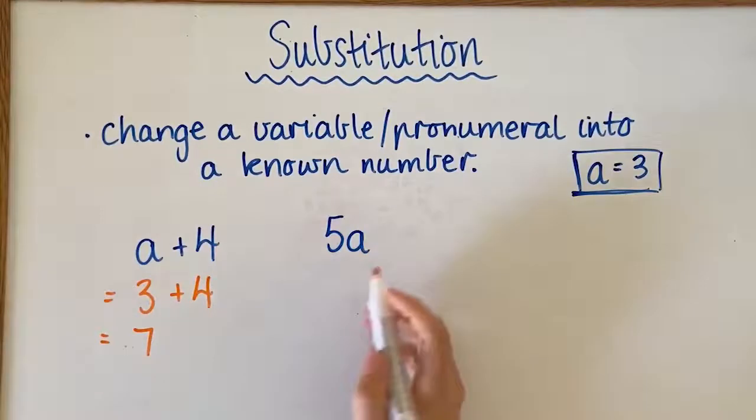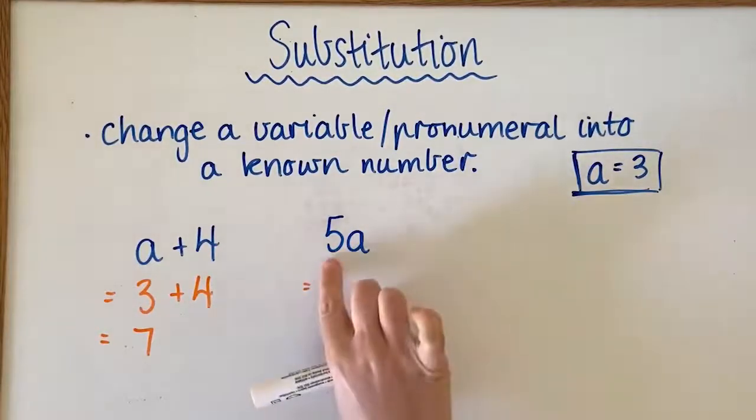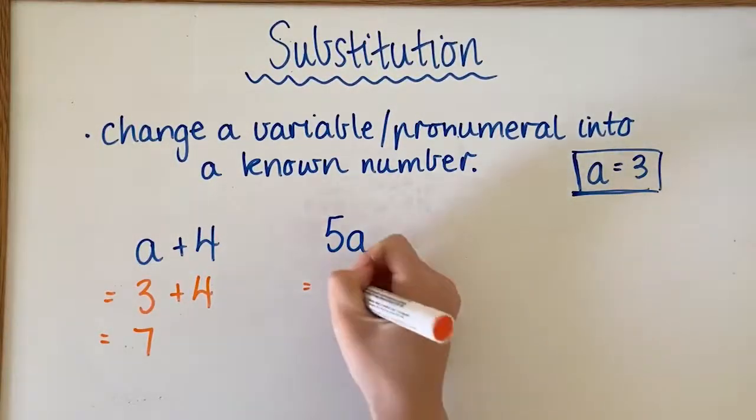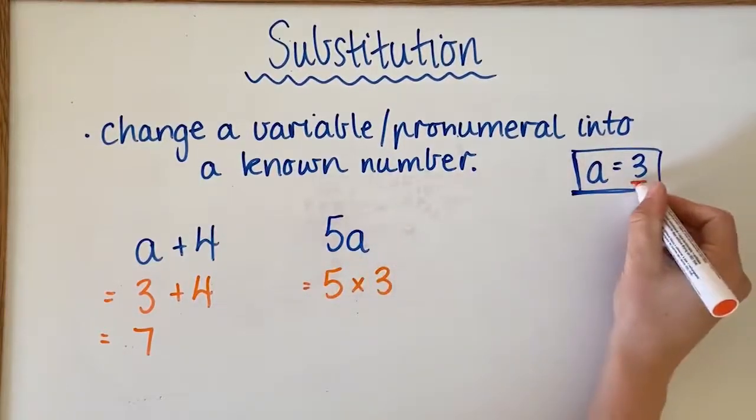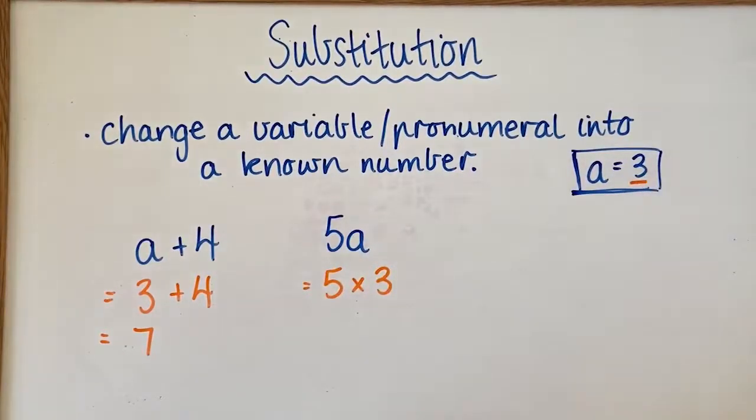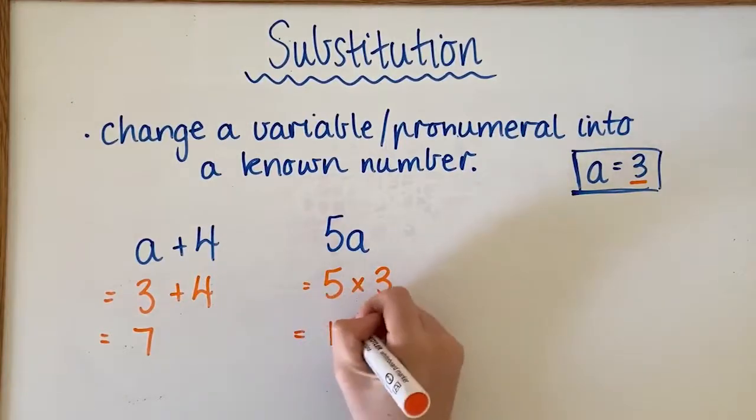In this second example, we've got 5a. From a previous video, we know that if these are touching, it's multiplication, so it would become 5 times 3. We're getting our 3 from up here, and 5 times 3 is 15.